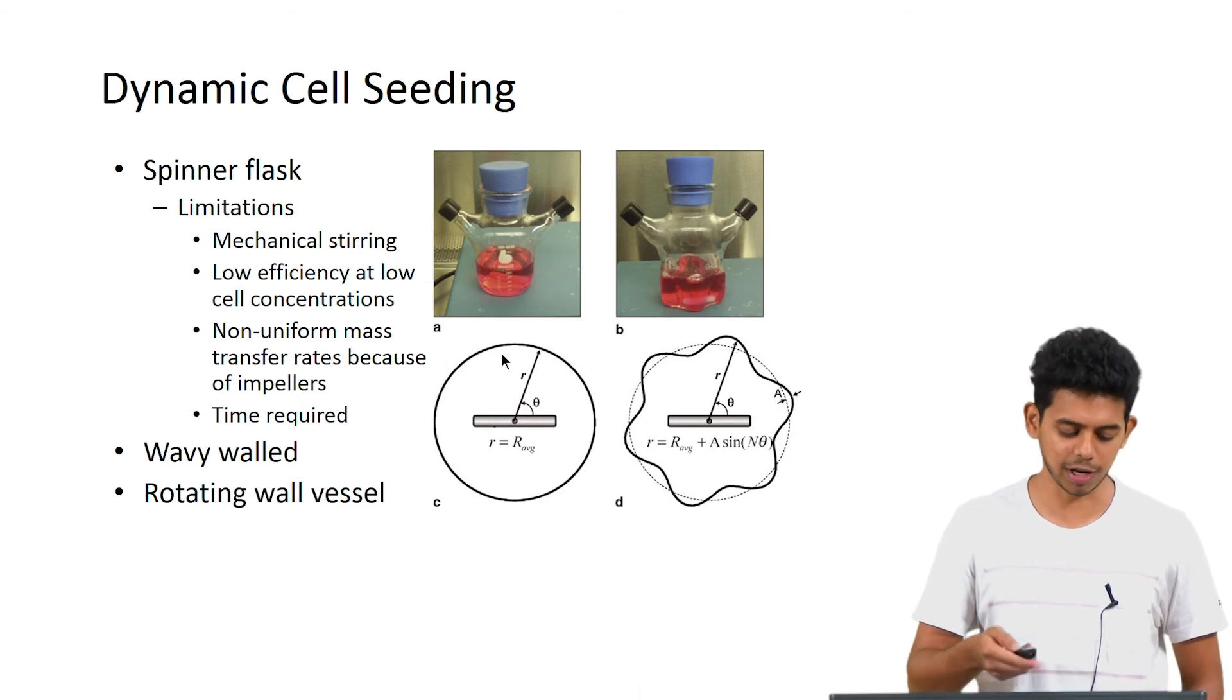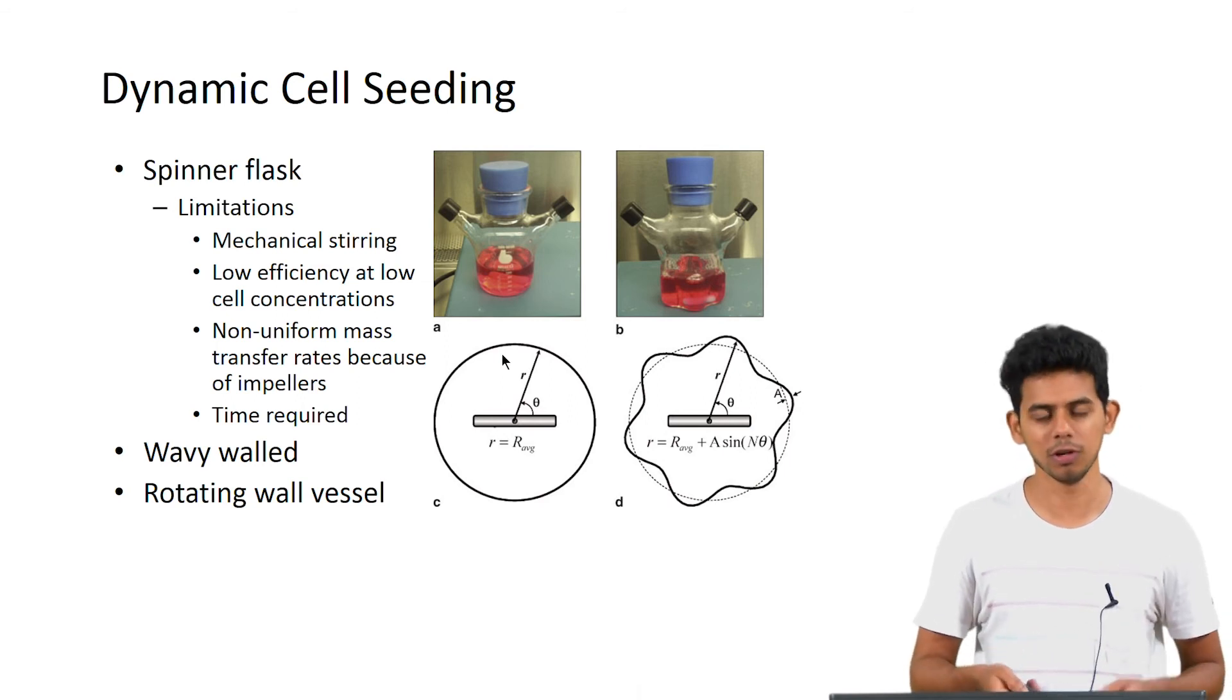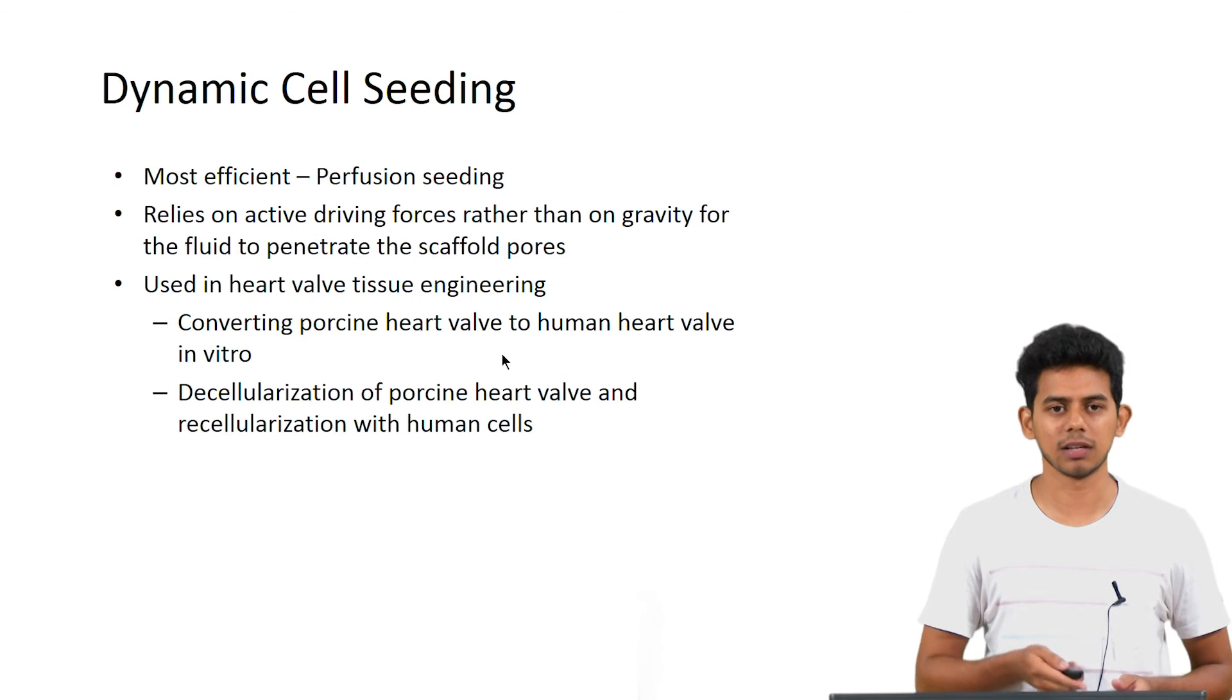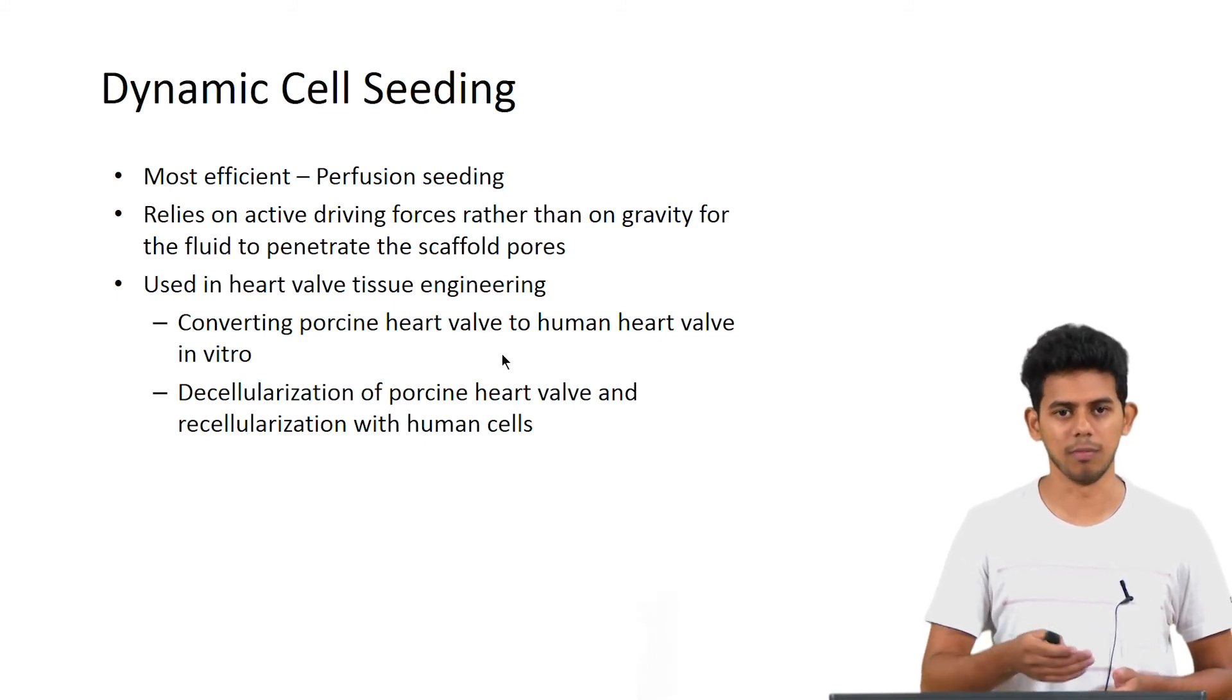Then the next one is a rotating wall vessel which we saw before. Amongst the dynamic cell seeding techniques, the most efficient one is perfusion seeding, wherein it relies on active perfusion rather than using gravity for seeding the cells onto the scaffold. It can penetrate throughout the scaffold and in a uniform fashion the cells can be seeded. It has been actually used in recellularizing a porcine heart valve with human cells by perfusion.